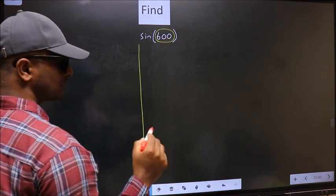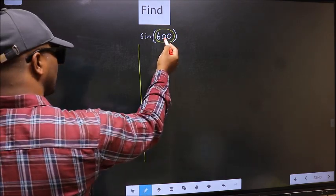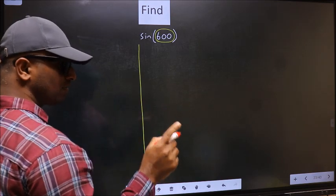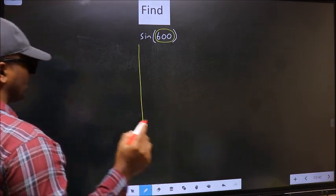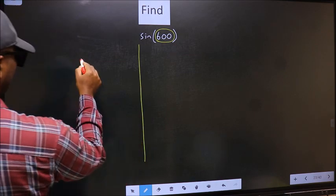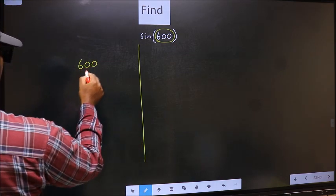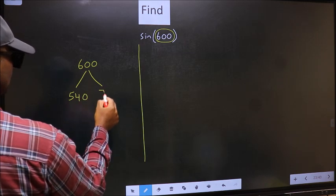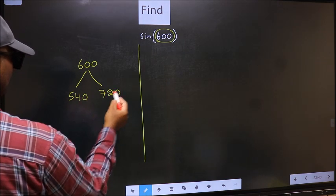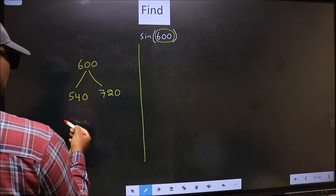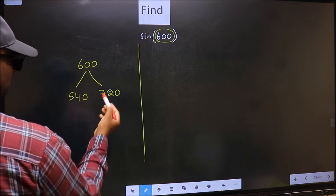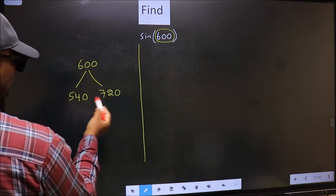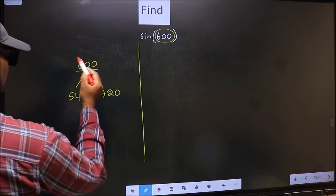Now you should check: 600 lies between which two multiples of 180? What I mean is, 600 lies between 540 and 720. This is 180 times 3 and this is 180 times 4. Between these two numbers, 600 lies.